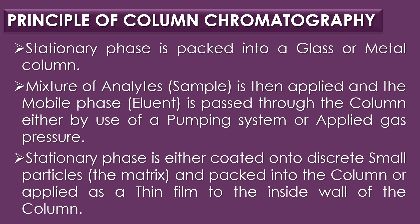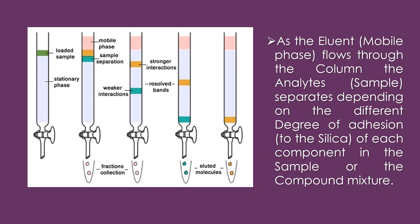In column chromatography, the stationary phase is packed into a glass or metal column. The mixture of analytes or sample is then applied, and the mobile phase, commonly referred to as eluent, is passed through the column either by a pumping system or applied gas pressure. The stationary phase is either coated onto discrete small particles and packed into the column or applied as a thin film to the inside wall of the column. As the eluent or mobile phase flows through the column, the analytes separate depending on their different degree of adhesion to the silica of each component in the sample mixture. This is the principle of column chromatography.